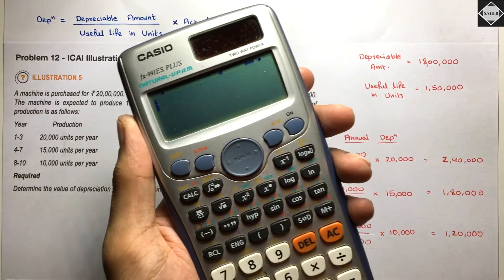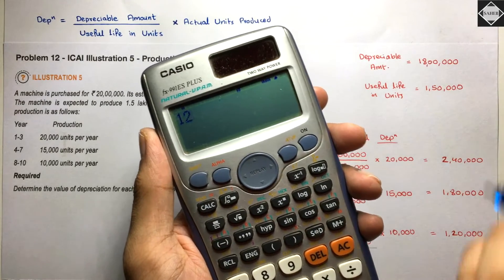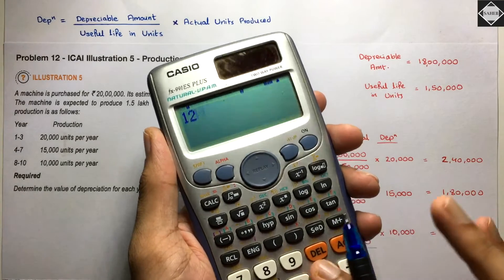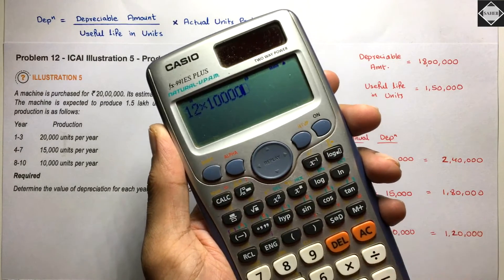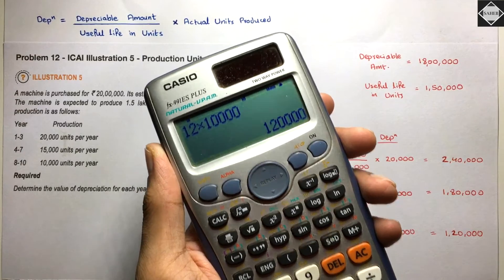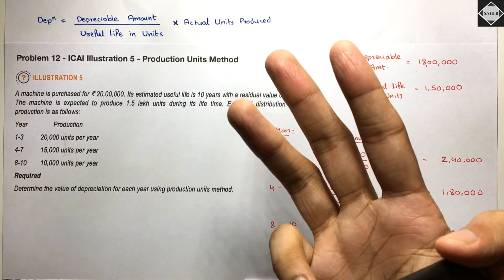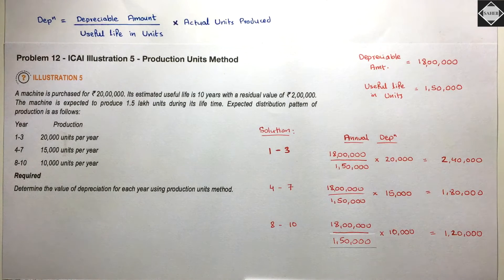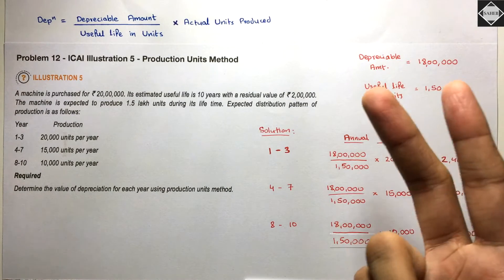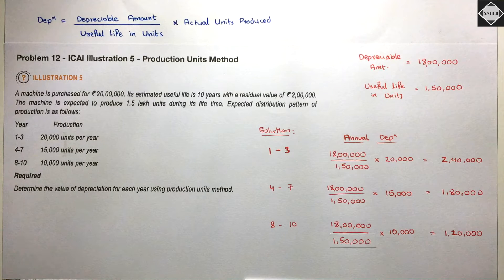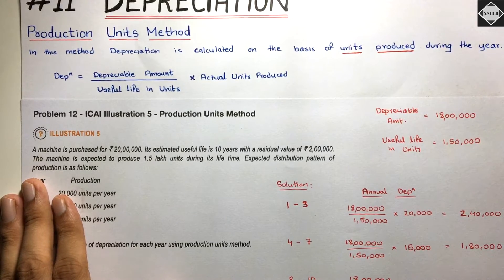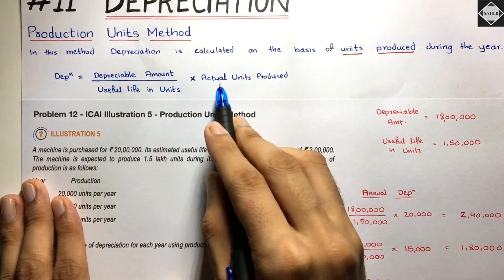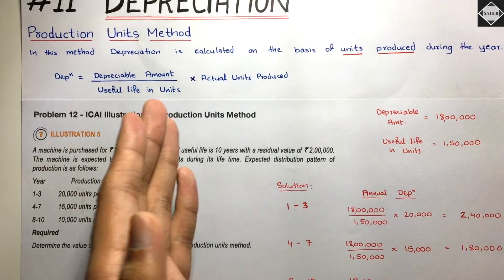For years 8 to 10: the depreciation per unit is still ₹12 (18 lakhs ÷ 1,50,000). Multiply ₹12 by 10,000 units = ₹1,20,000. So the annual depreciation for years 8, 9, and 10 is ₹1,20,000 each. This is very similar to the Machine Hour method — it's just that hours are replaced by units.